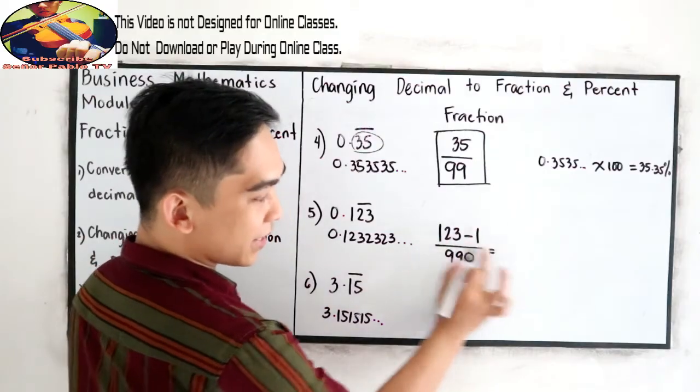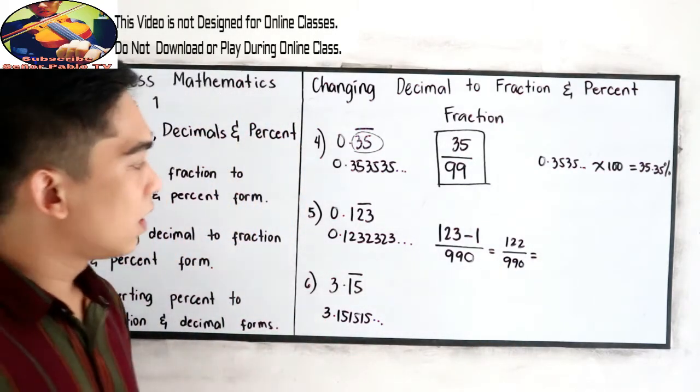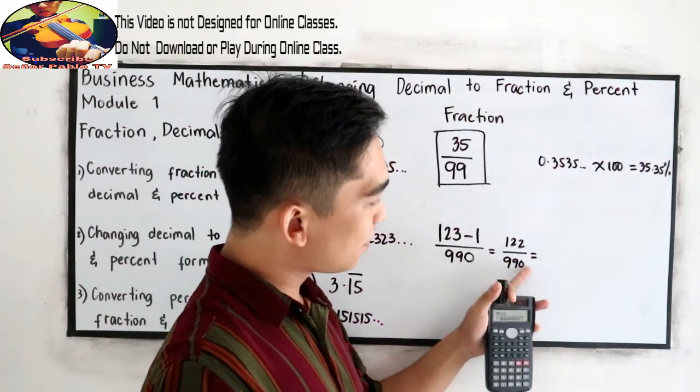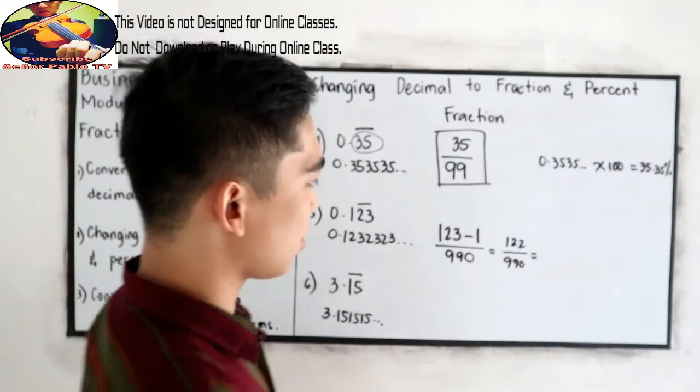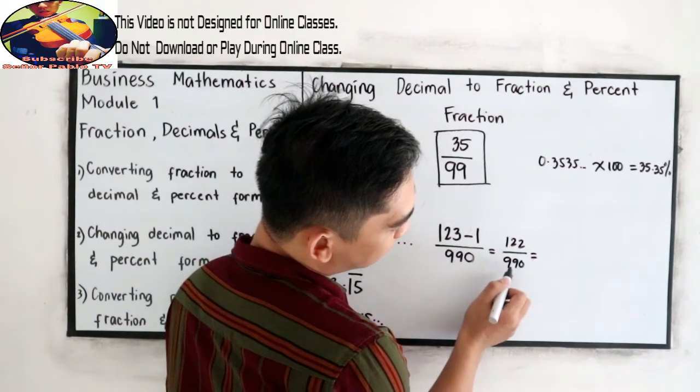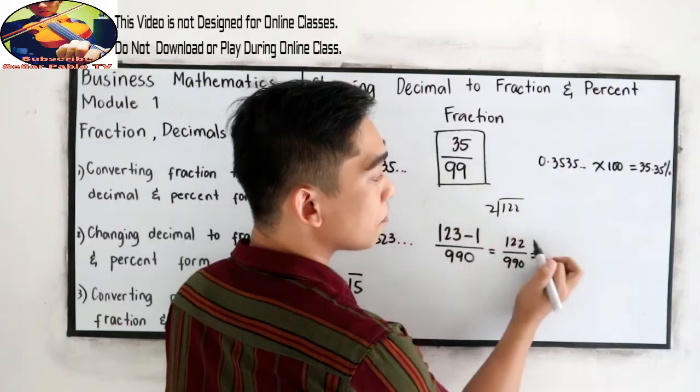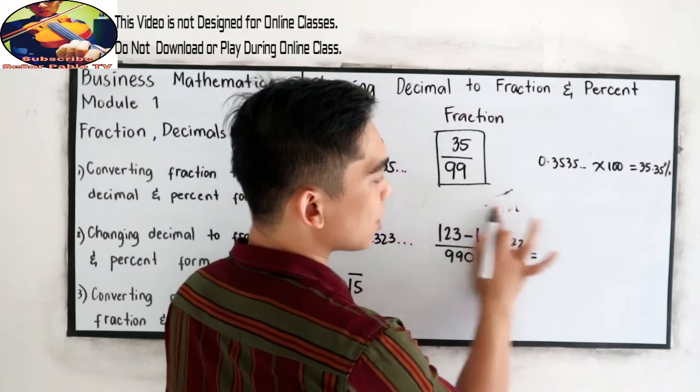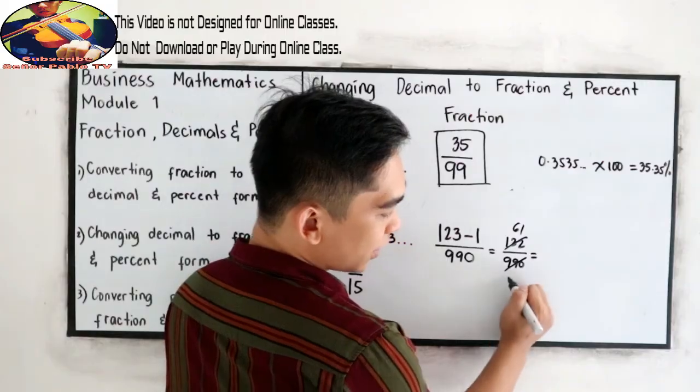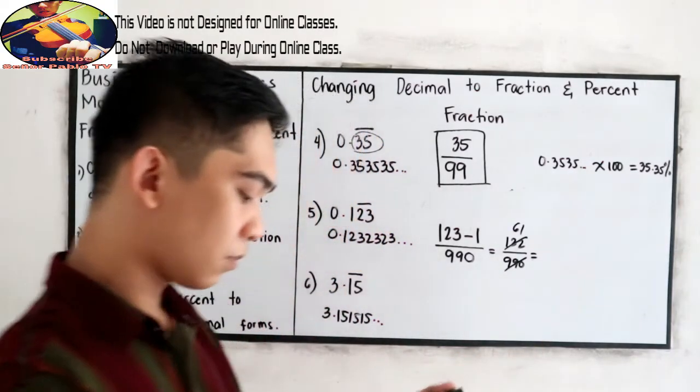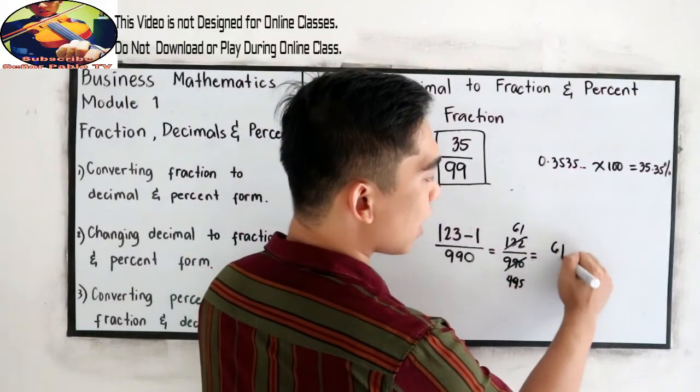Reduce or simplify, 122 over 990. Divisible by 2. So this will become, 122 divided by 2, 61. And 990 divided by 2, 495. So 61 over 495.